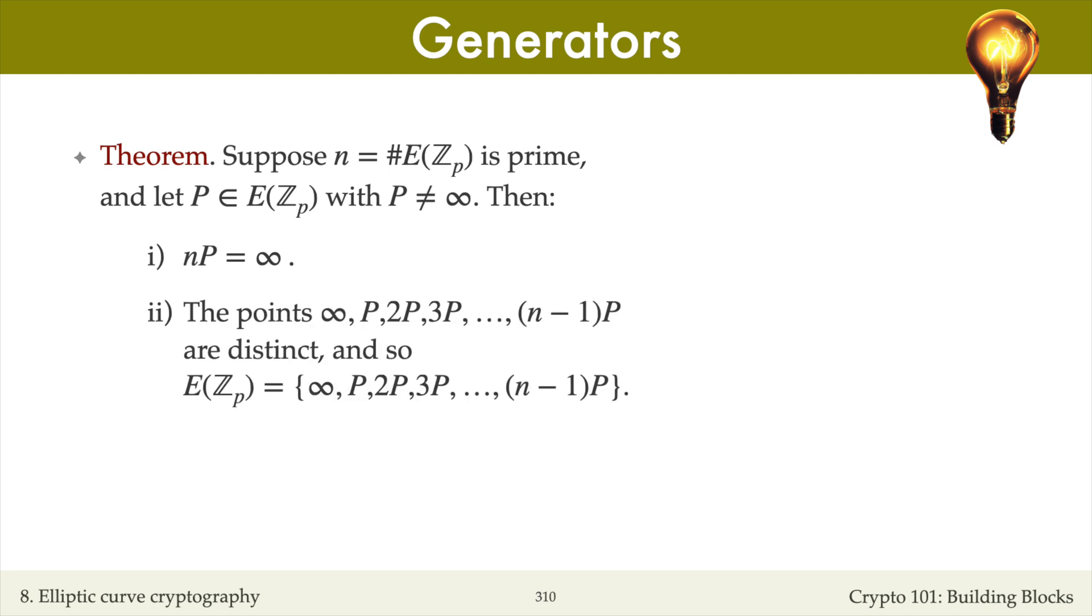Also, when you add P to itself repeatedly, the points you obtain, namely infinity, P, 2P, 3P, up to n minus 1 times P, are distinct points.